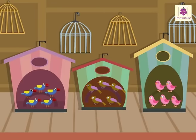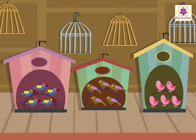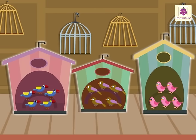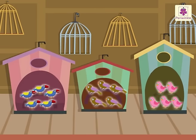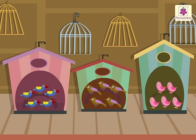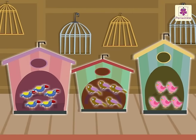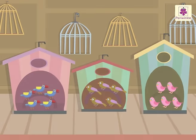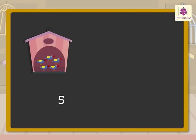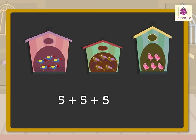Now, let us look at another example. To get the total number of birds, we add the number of birds in all three birdhouses. That is, 5 plus 5 plus 5 is equal to 15. That is, 3 times 5 is 15.